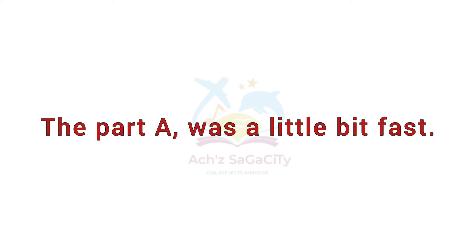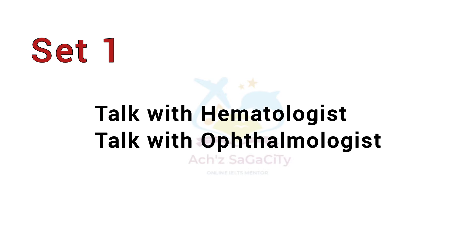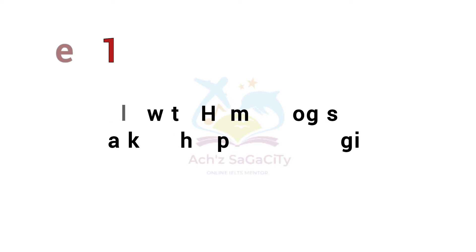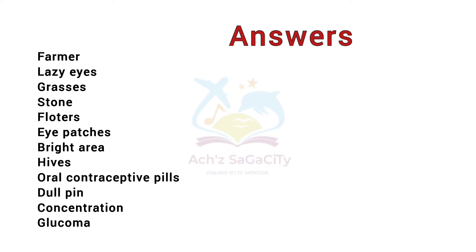Now related to the listening module. Overall, students said part A was a little bit fast, so you need to prepare accordingly. The first set involved a talk with a hematologist and also with an ophthalmologist. Answers shared by students include: farmer, lacy eyes, grasses, stone, floaters, eye patches, bright area, hives, oral contraceptives, dulpine, concentration, and glaucoma. These were related to the first set.